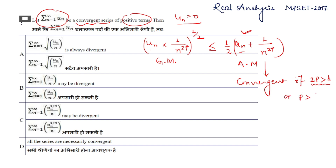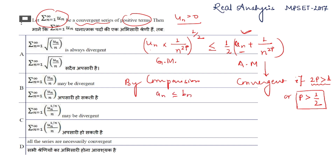So 2p should be greater than 1, meaning p should be greater than 1/2. If p > 1/2, the right-hand side series is convergent. By the comparison test, if aₙ ≤ bₙ for each n and bₙ is convergent, then aₙ is also convergent.